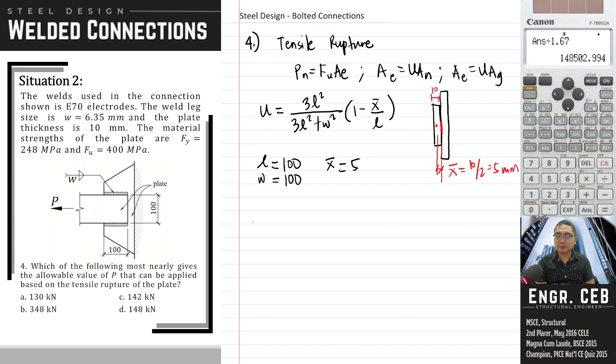Substitute: X bar is 5. We can now compute the shear duct factor: 3 times 100 squared over (3 times 100 squared plus 100 squared) times (1 minus 5 over 100). That is 0.7125.